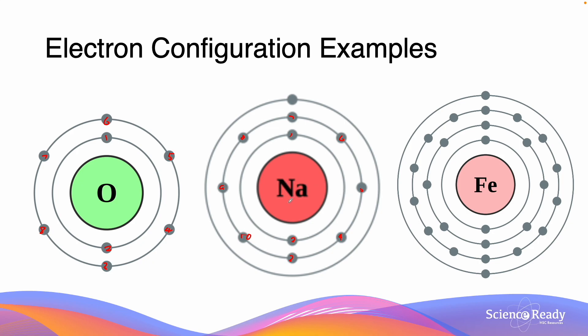Now as I said earlier, sodium has 11 electrons, which means that we have one more electron remaining, and we add that into the third shell, 11.